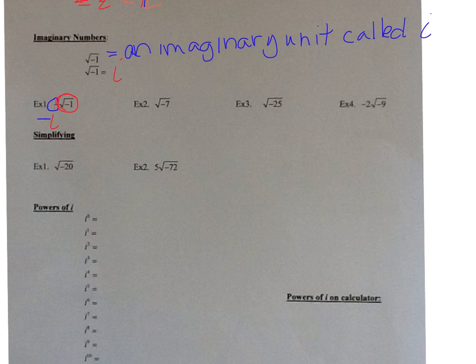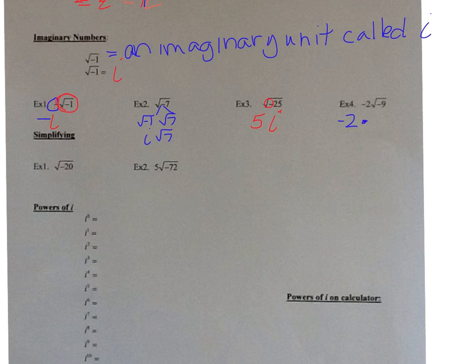What about the square root of negative 7? That is the square root of negative 1 times the square root of 7. The square root of negative 1 is i, and I can't simplify the square root of 7, so it's i√7. What about the square root of negative 25? The negative becomes i and you have the square root of 25 which is 5, so it would be 5i — the i goes after like a variable. And negative 2 times the square root of negative 9: the square root of negative 9 is 3i, so that gives negative 6i.